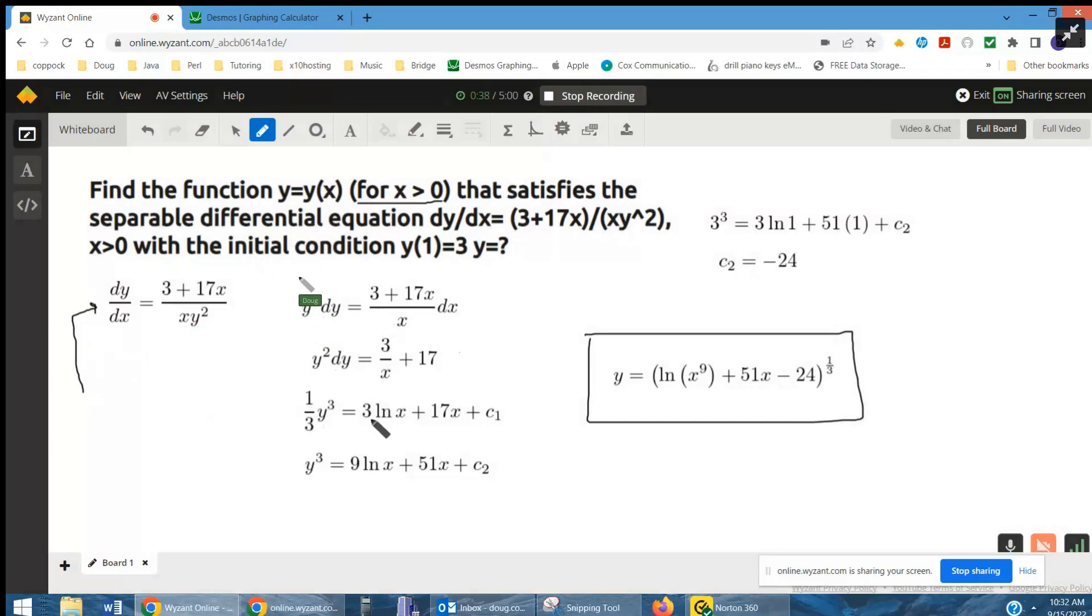The antiderivative of 3 over x is 3 ln of x. I drop the absolute value symbol because we're told that x is greater than 0. Antiderivative of 17 is 17x plus some constant of integration. And if I multiply both sides by 3, I'll have a formula for y cubed. Here I change the constant. It's just a new constant.